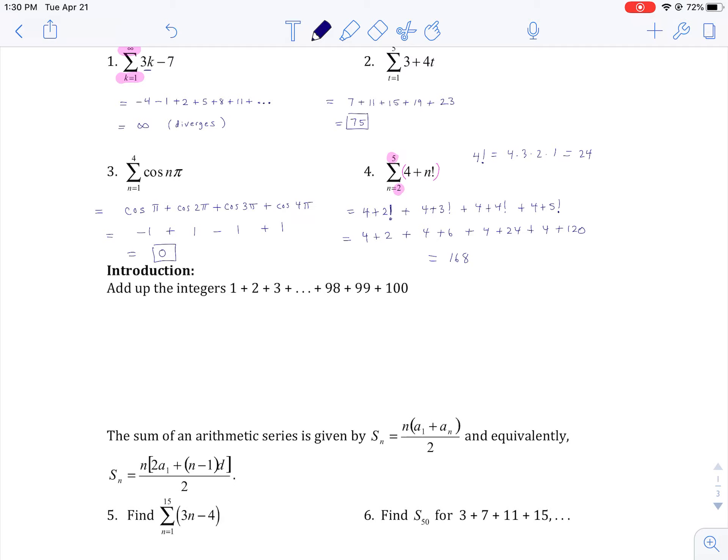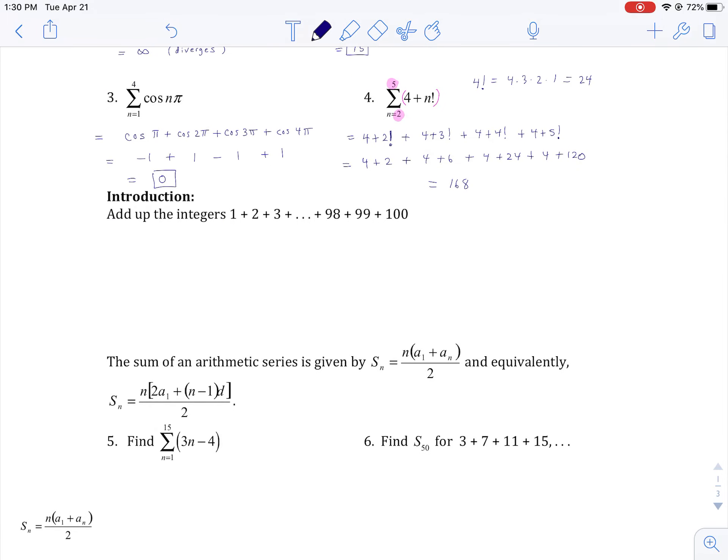So an arithmetic series is just an arithmetic sequence with plus signs. The simplest arithmetic series involves adding up the numbers 1 through 100 inclusive.